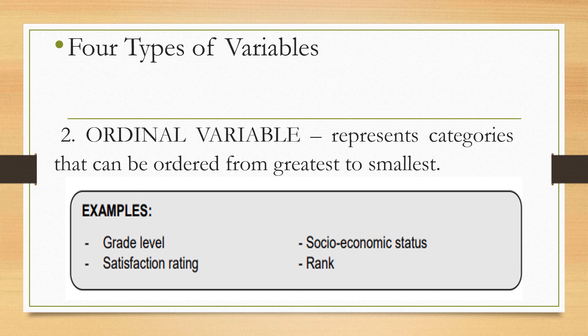Another one is ordinal variable. When we say ordinal variable, it represents categories that can be ordered from greatest to smallest, or smallest to greatest. For example, grade level — we order from Grade 7, 8, 9, 10, 11, to 12. Satisfaction rating is another example: not satisfied, satisfied, very satisfied — it is ordered. Social economic status rank is also an example of ordinal variable.